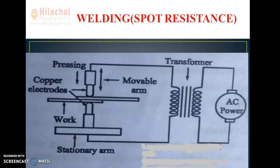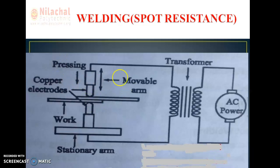As per the definition: spot welding is a resistance welding process in which overlapping sheets are joined by local fusion at one or more spots, by the heat generated due to resistance to flow of current through the workpiece held together under force by two electrodes. Here we are using two electrodes, one on each side.